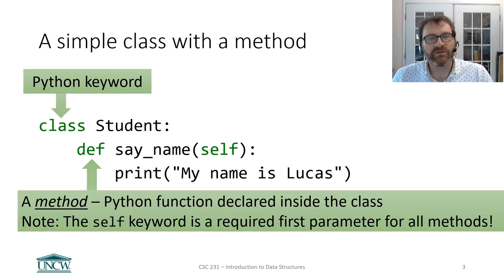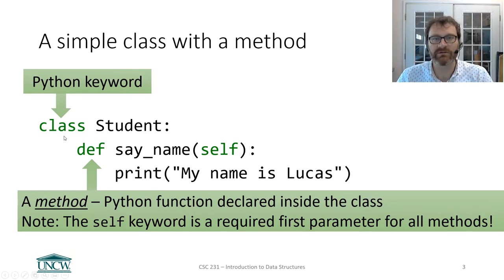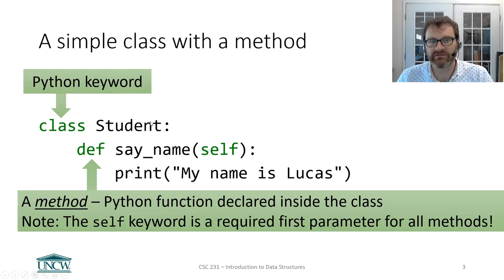Here we are going to define a very simple class and we're going to call it Student. This will create a new data type in Python for us to use. Now, this new data type will only be there for as long as our current Python interpreter is running — it goes away if you reboot or Python crashes. To create a class in Python, you need the keyword 'class', followed by a name. Class names in Python are capitalized — camel case or title case. So: class Student, followed by a colon, then we indent and define a method.